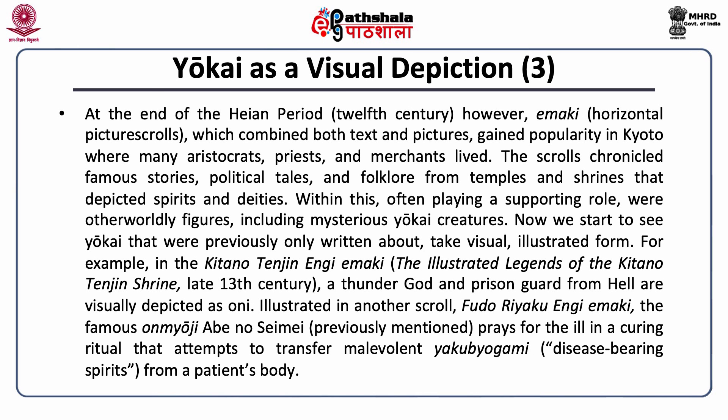At the end of the Heian period, Emaki — horizontal picture scrolls which combined both text and pictures — gained popularity in Kyoto, where many aristocrats, priests, and merchants lived. The scrolls chronicled famous stories, political tales, and folklore from temples and shrines that depicted spirits and deities. Within this, often playing a supporting role, were otherworldly figures including mysterious Yokai creatures. Now we start to see Yokai that were previously only written about take visual illustrated form.